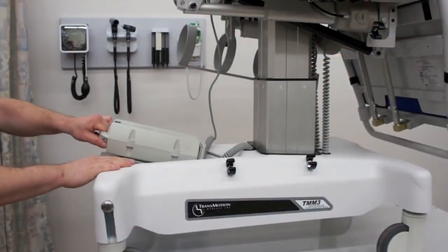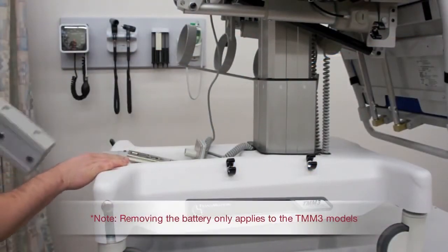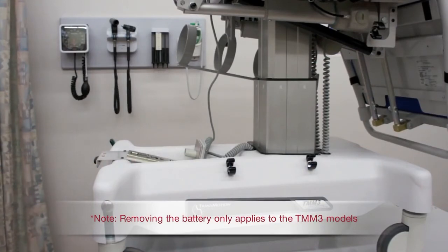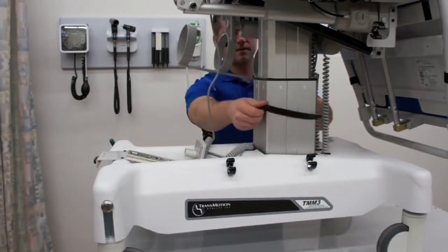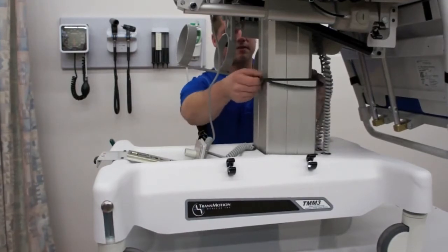Remove the battery from the top of the base cover. This only applies to the TMM3 series stretcher chair. Lift the rubber cover slip up on the column for access to the base cover.